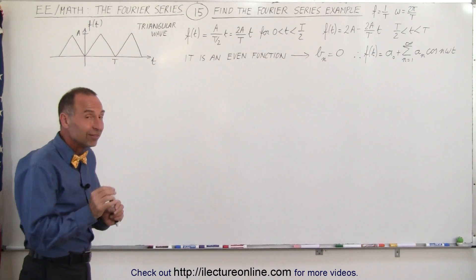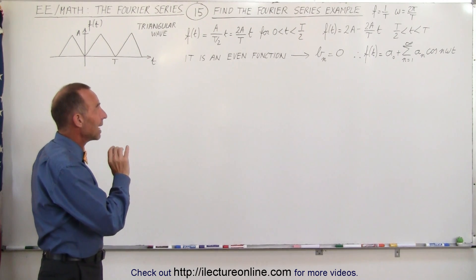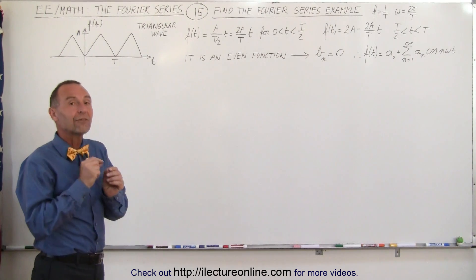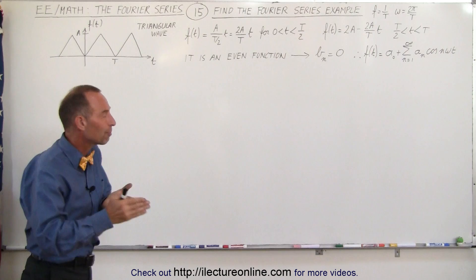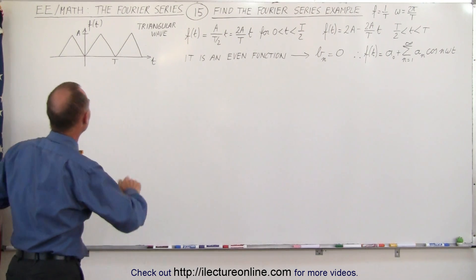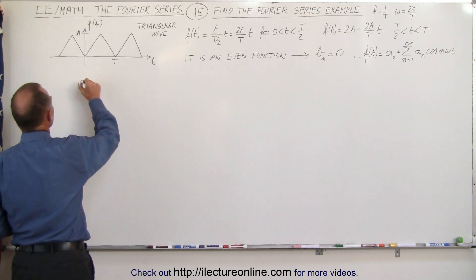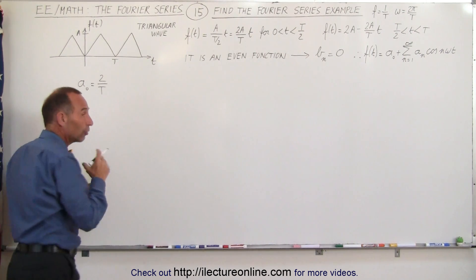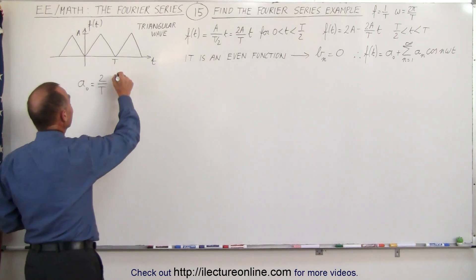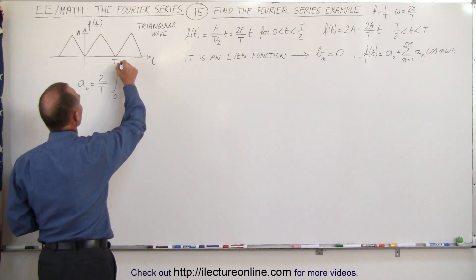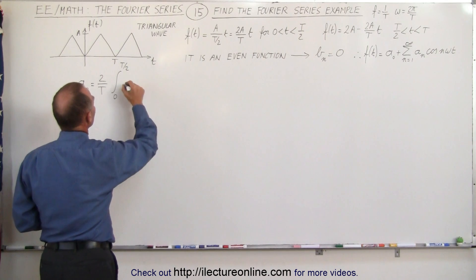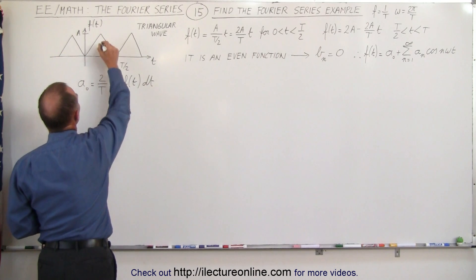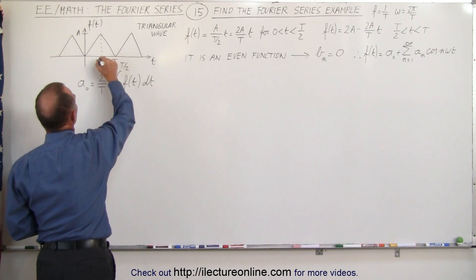Since it's even, we can find the a_0 and a_n coefficients more easily by only integrating through the first half of the period because of the symmetry. So what we can say is that a_n can be found by taking 2 over T — instead of 1 over T, we're going to double the amplitude because we're going to integrate only over the first half of the period T/2 — and we're going to integrate f(t) dt from zero to T/2.